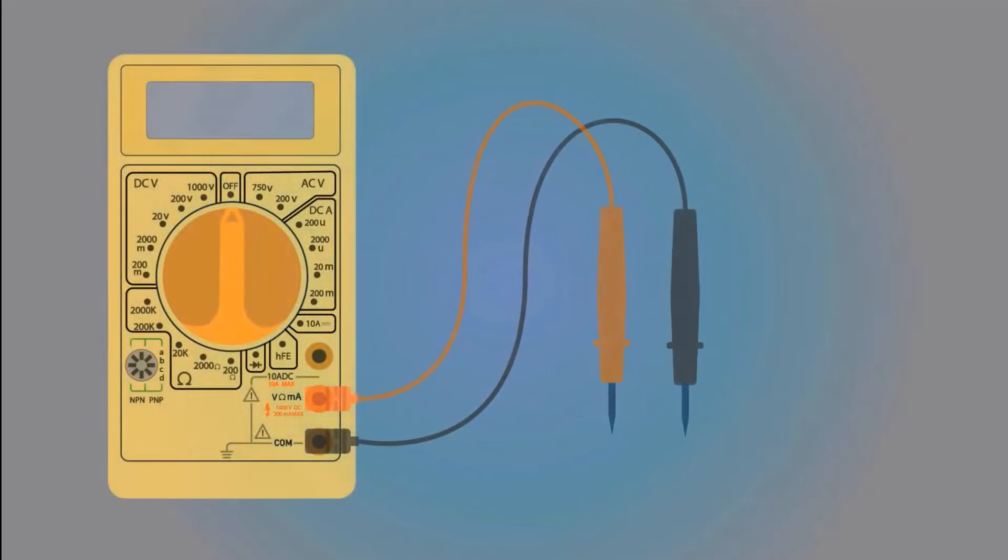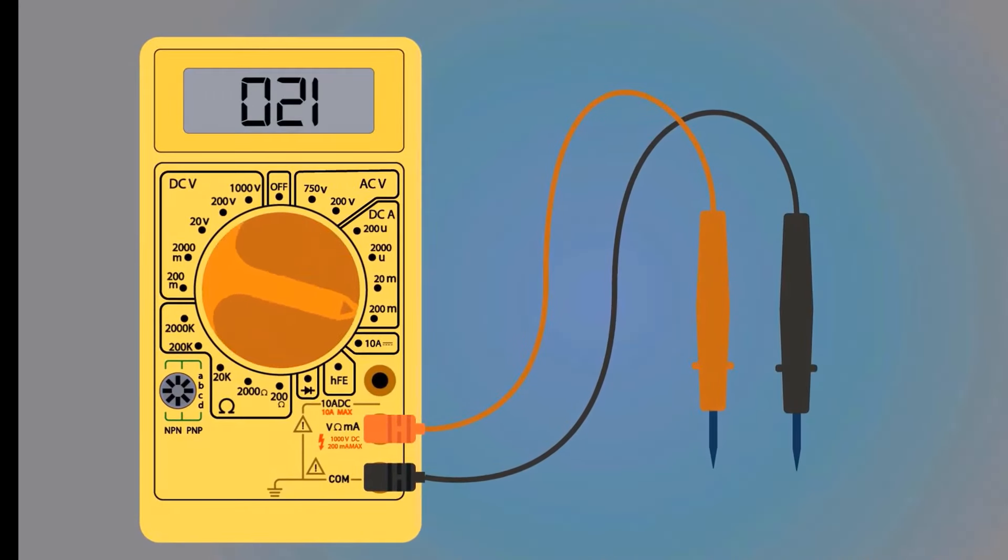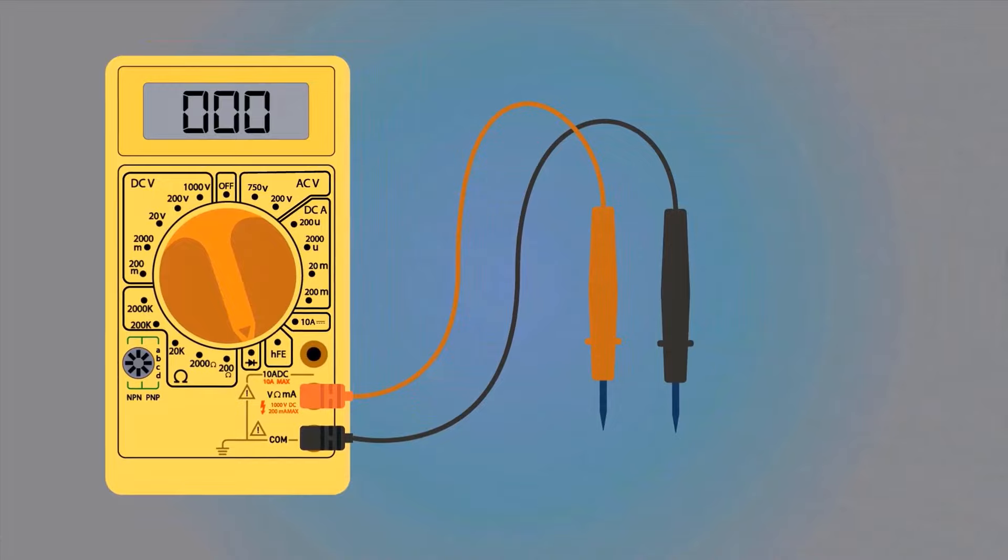Take a multimeter, move the selector switch to continuity. Short both probes. When negative and positive terminals meet, the multimeter will produce a sound. This means the multimeter is okay and ready for use.